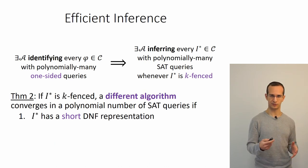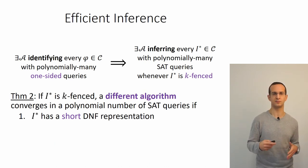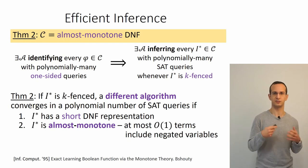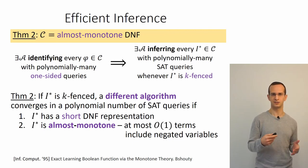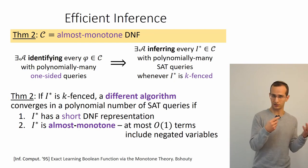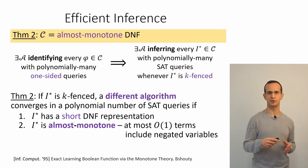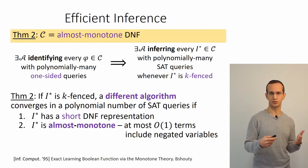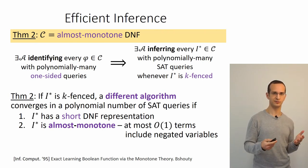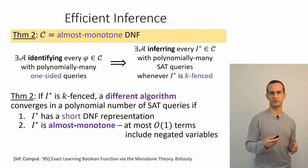We can apply the same theorem to a different algorithm—one by Beshuti that learns almost monotone DNF formulas—and get that a related algorithm successfully infers an invariant in a polynomial number of SAT calls whenever there's an almost monotone short DNF representation, meaning almost all the terms in the DNF don't have negated variables.